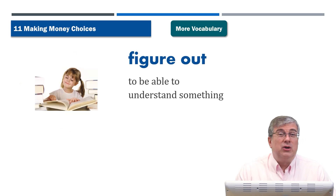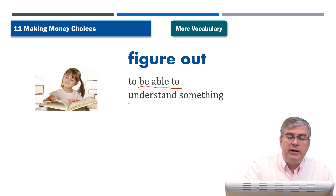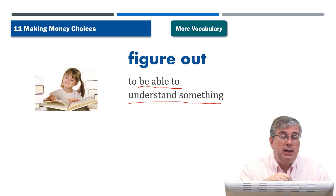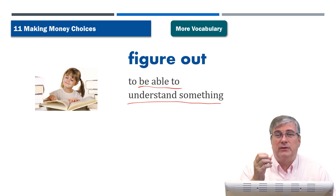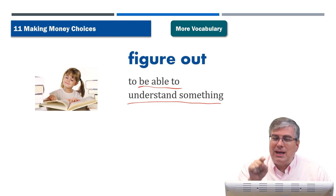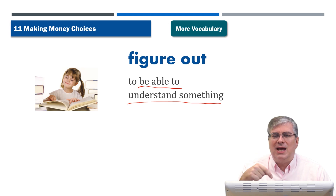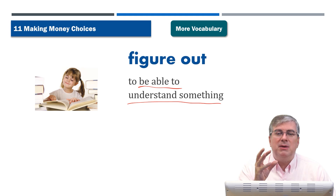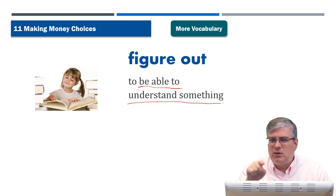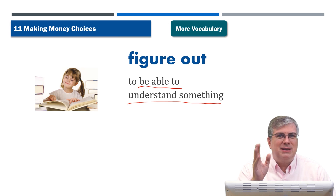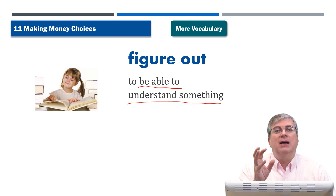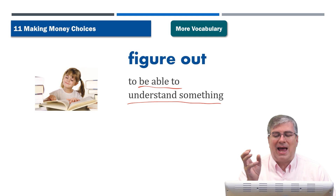'Figure out' means to be able to understand something. Are you good at figuring things out? If you're reading a book about math or science and you read it and you understand it — you may have to read it a couple of times, but then you understand it. You figured it out. It might be a puzzle, difficult to understand at first, but if you read it a few times, listen to the teacher's explanation, or go online and read more about it, you say: I understand now. I figured it out.